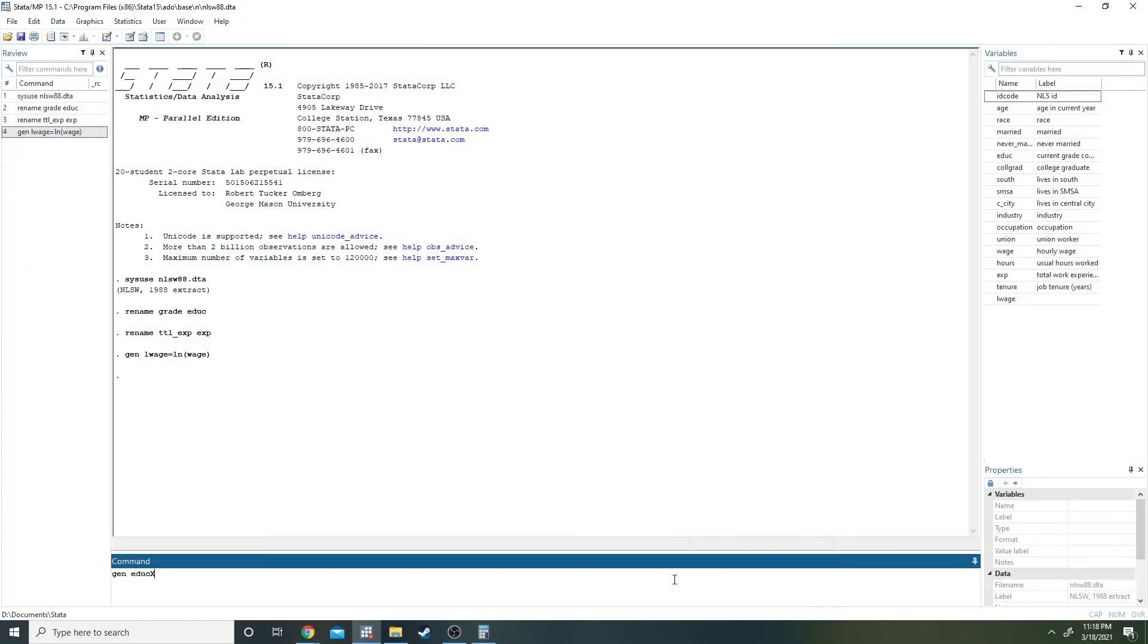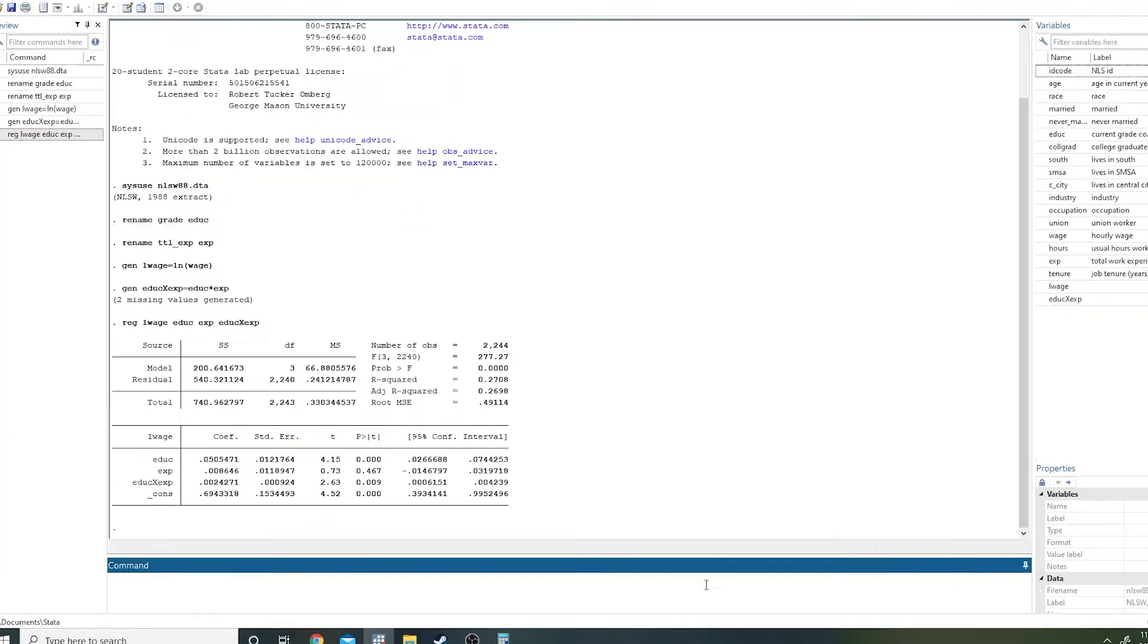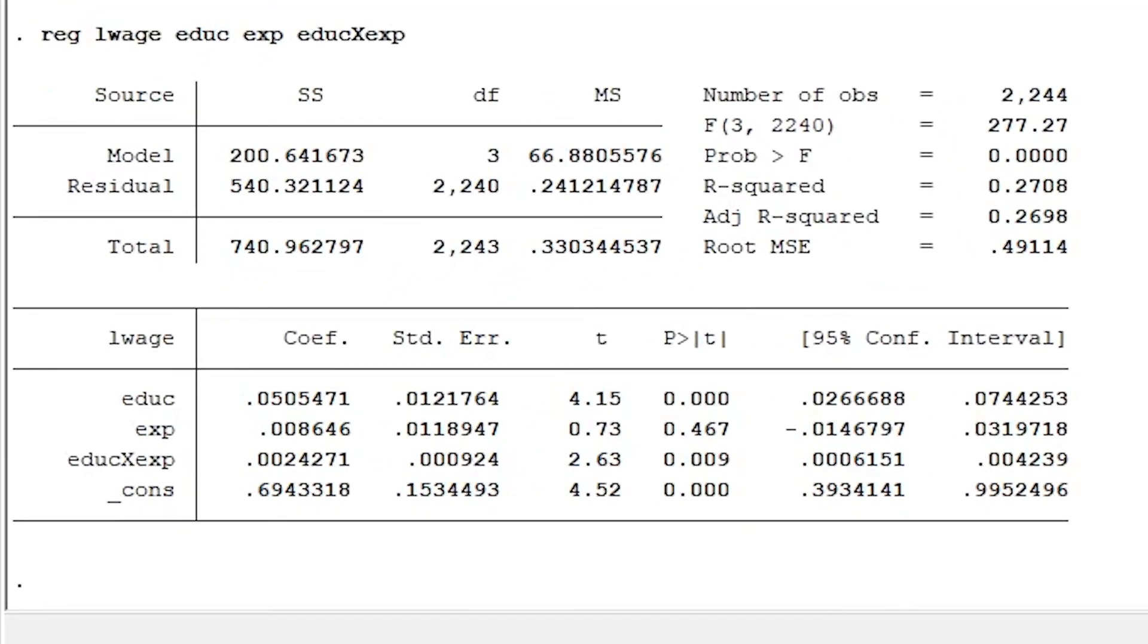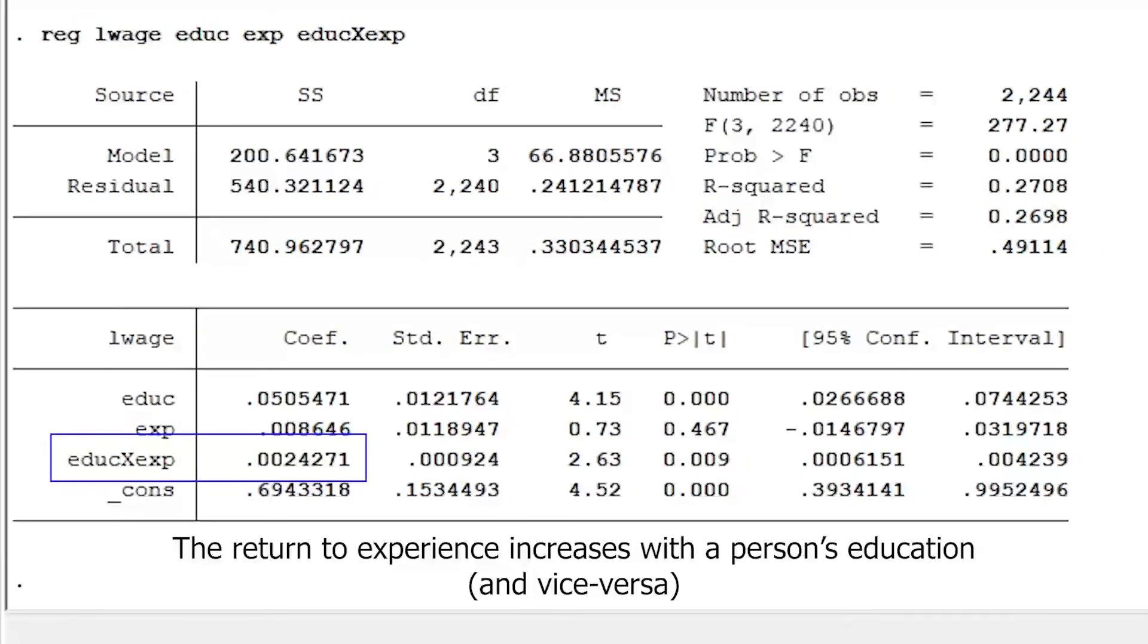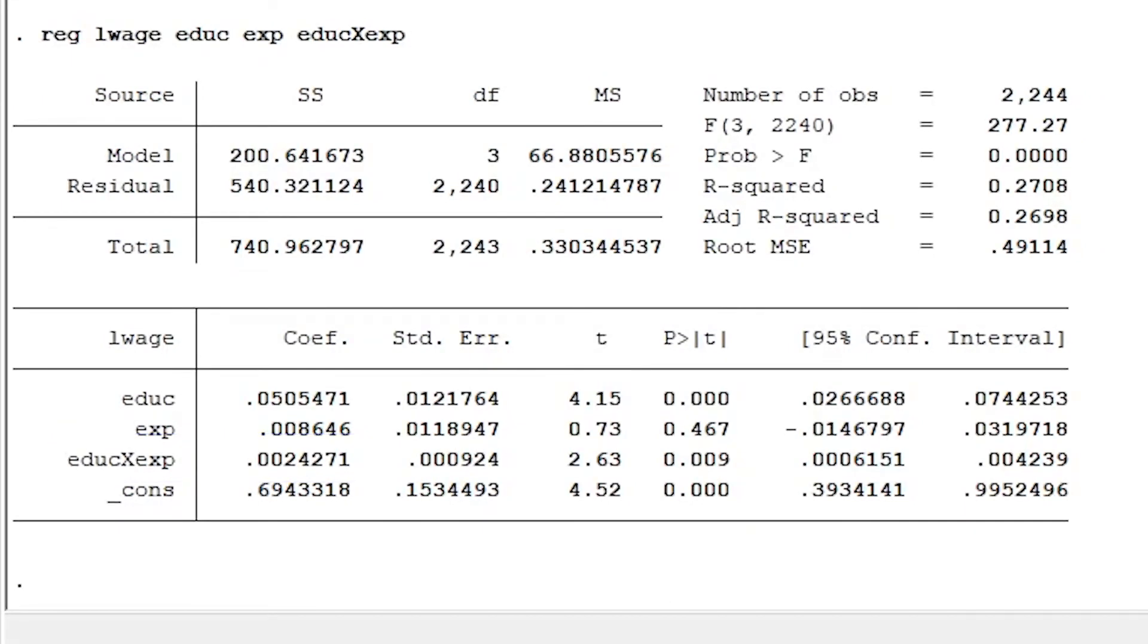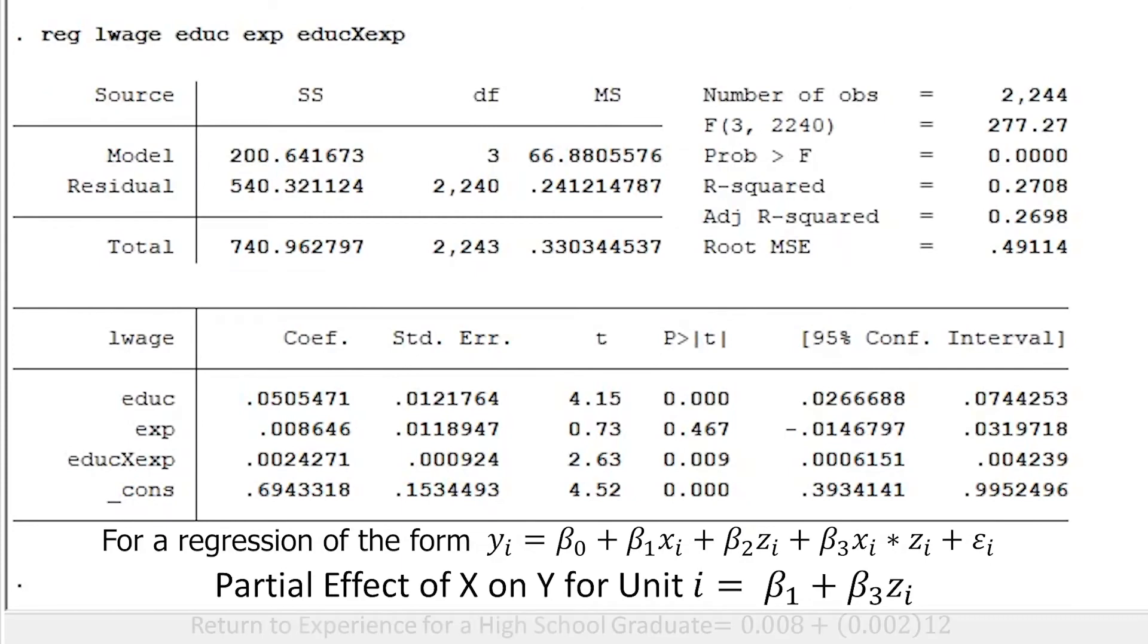In this case, we'd just multiply together our education and experience variables, and then regress log wages on education, experience, and our interaction term, which gives us these results. Now, interpreting models with interaction terms can be a little tricky. Since the interaction term is positive, we know that our basic intuition was correct. The return to experience increases as education increases. But knowing the actual effect of experience requires some calculation using this formula, where we plug in a value for education. So, for someone with a high school diploma or 12 years of education, each year of experience raises wages by 3.2 percent, while wages increase by 4.4 percent per year of experience for people with master's degrees.